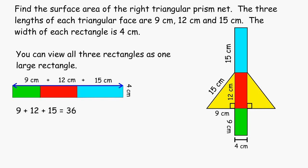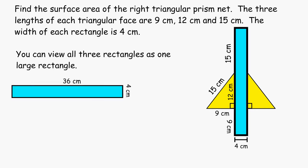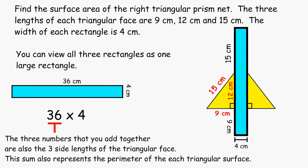We can view these three rectangles as a single rectangle that is 4 centimeters by 36 centimeters. By multiplying these two dimensions, we can come up with the total area of all three rectangles at the same time. 36 and 4 will produce 144 square centimeters.